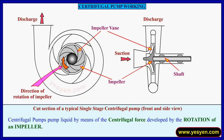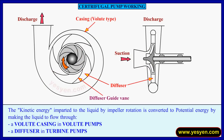Centrifugal pumps pump liquid by means of the centrifugal force developed by rotation of an impeller. The kinetic energy imparted to the liquid by impeller rotation is converted to potential energy by making the liquid flow through a volute casing in volute pumps, or a diffuser in turbine pumps.